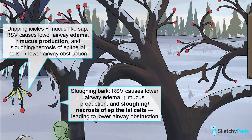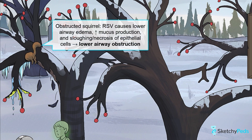What happens physiologically to the airways in bronchiolitis? The viral infection leads to lower respiratory airway edema, represented by these icicles dripping fluid off the bronchial tree branches, increased mucus production, depicted by this sticky accumulation of sap, and eventually sloughing and necrosis of epithelial cells within the airway, denoted by the sloughing bark breaking off of the tree. All of these changes lead to obstruction of the lower airway, kind of like how this chubby squirrel is now obstructing this hole in the tree.